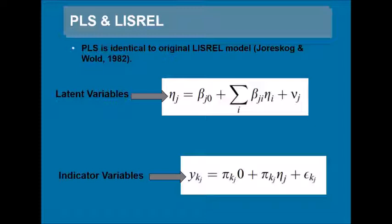In these equations, eta is the latent variable, y is indicator variables, beta and pi are regression coefficients, whereas nu and epsilon are random errors.